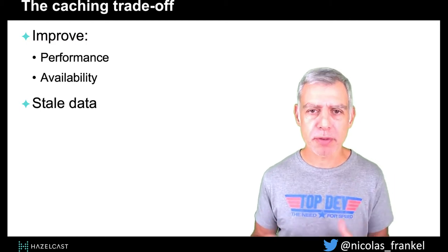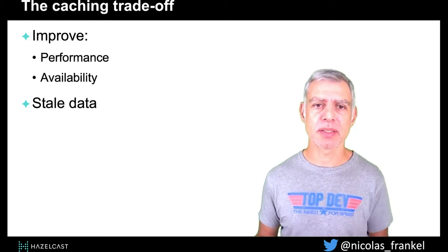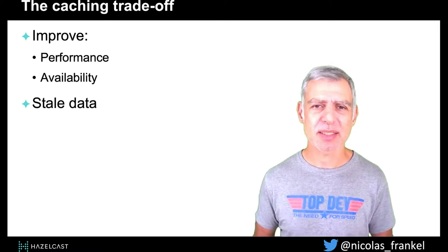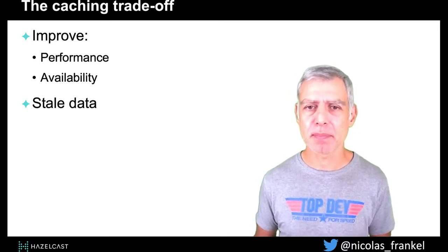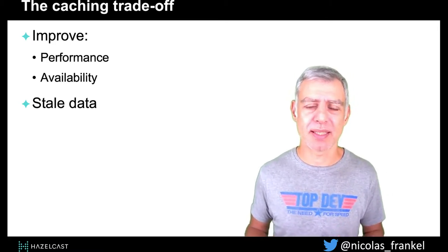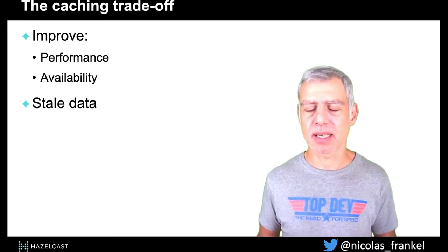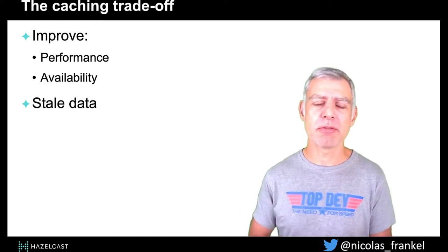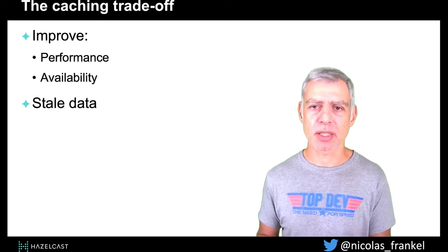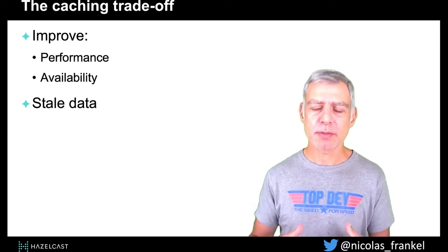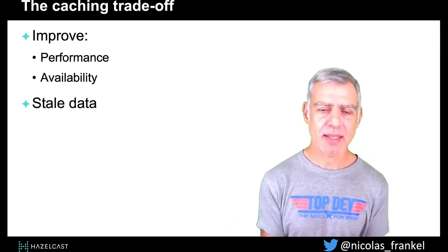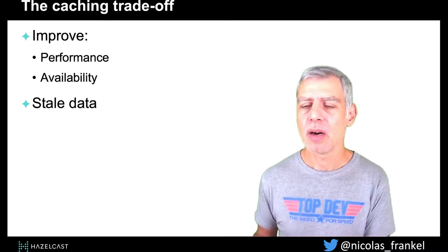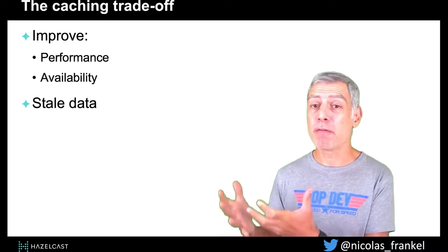If you remember one thing from this talk, it's that caching is a trade-off. You might have heard that caching is a sign of a badly designed system — it's not always the case. There are a lot of valid reasons to have caching. So this trade-off is: you accept to have stale data, and in return you get fast data or available data.